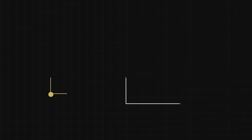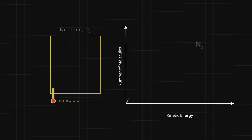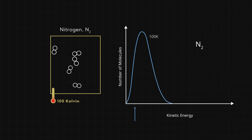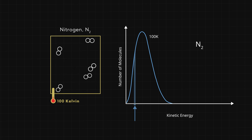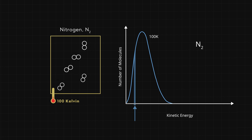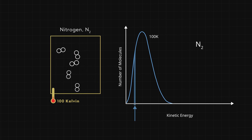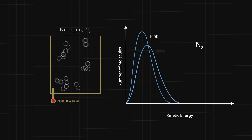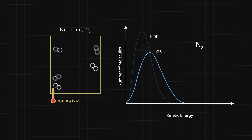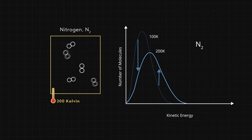This is where graphs of distribution functions come in handy. We pick some range of kinetic energies on the x-axis, and the area under this curve — called the distribution function — is the number of particles moving with kinetic energies in that range. This gives us a more detailed view of how the sample at 200 Kelvin compares to that at 100 Kelvin. When we double the temperature, we lower the number of molecules moving with low kinetic energy and increase the number of particles moving with high kinetic energy.